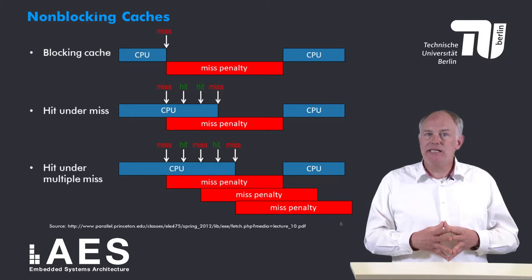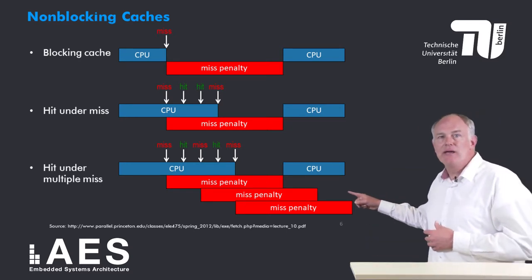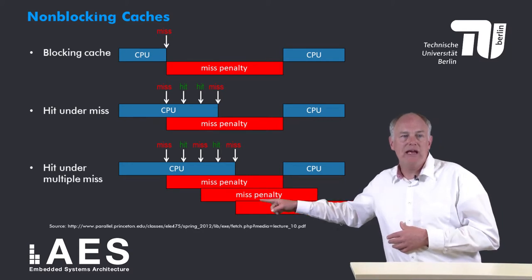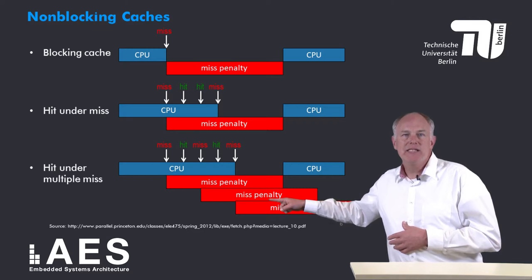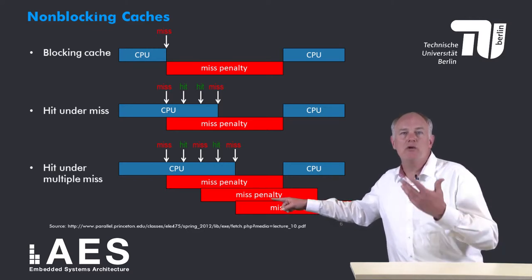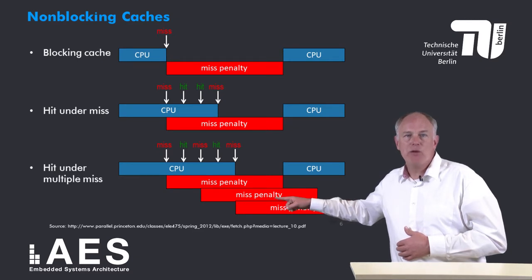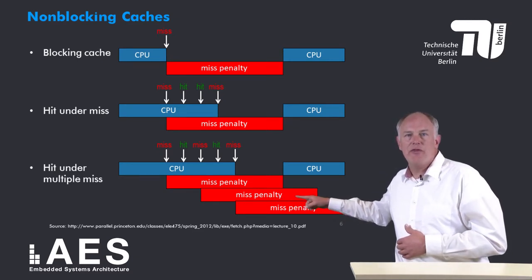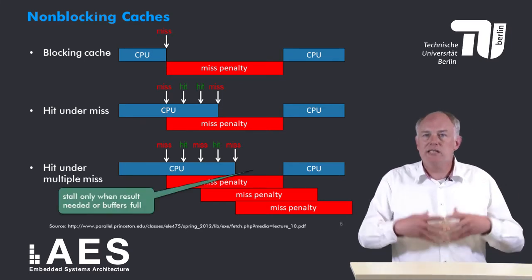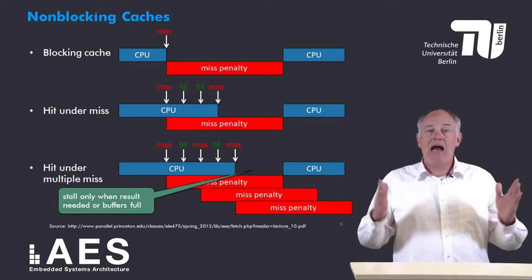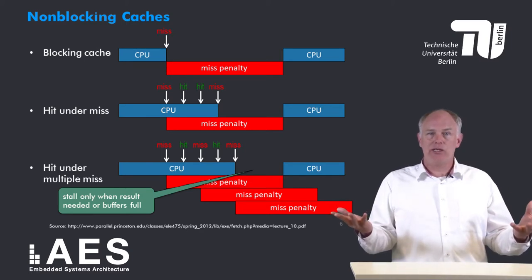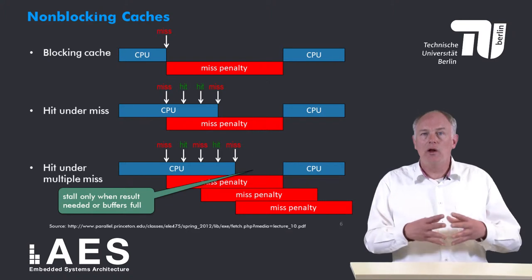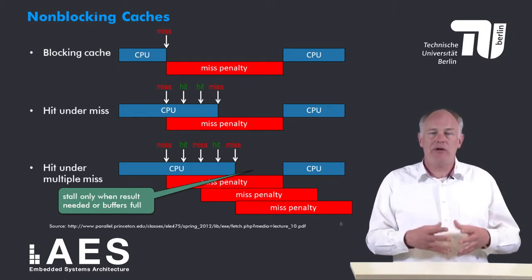If we allow several outstanding misses, the CPU computes and then incurs a miss but does not stall. The cache supplies a hit and then there is a second miss. The CPU still does not have to stall because several misses can be outstanding. After another hit and a third miss, the CPU may have to stall either because all in-flight instructions are waiting for operands, or because the cache controller has buffers only for two outstanding misses.